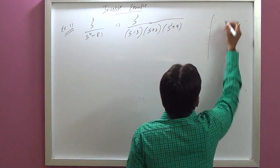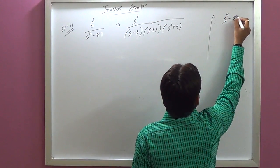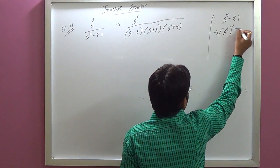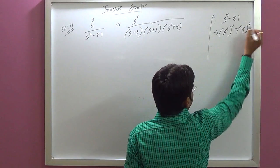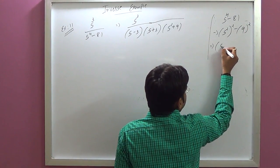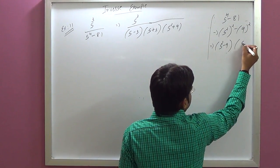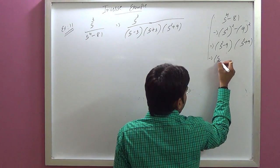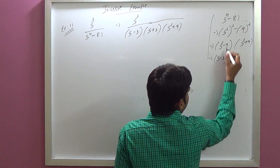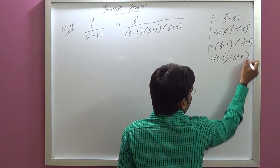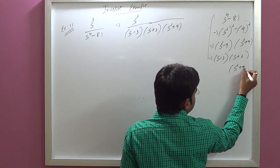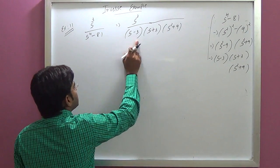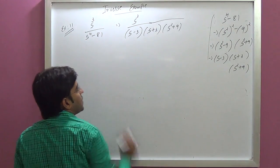Because S raised to 4 minus 81 can be written as S squared minus 9 times S squared plus 9, that means S squared minus 9 factors to S minus 3 and S plus 3, and S squared plus 9 remains. We can put these factors in the denominator.